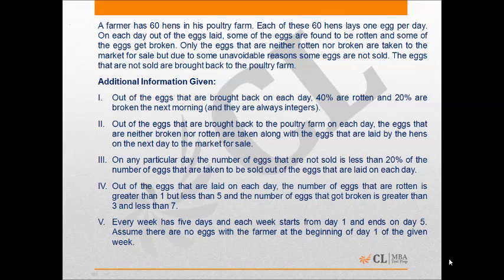Out of the eggs laid each day, the number that are rotten is greater than 1 but less than 5 — so it could be 2, 3, or 4. The number that got broken is greater than 3 but less than 7 — so it could be 4, 5, or 6. Every week has 5 days, starting from day 1 and ending on day 5. Assume there are no eggs with the farmer at the beginning of day 1.